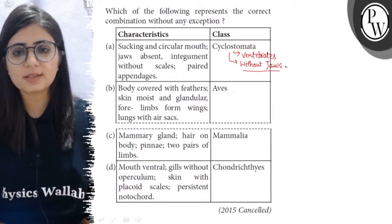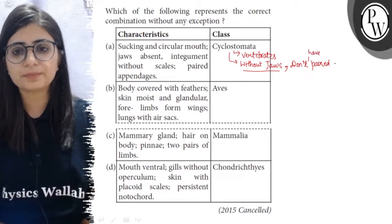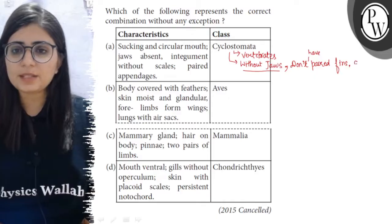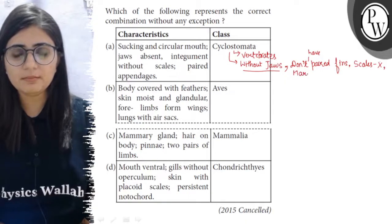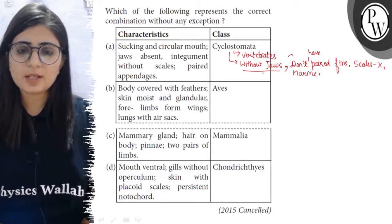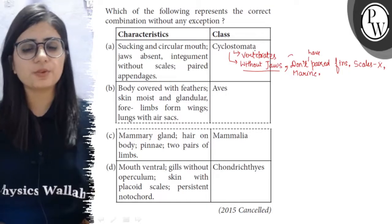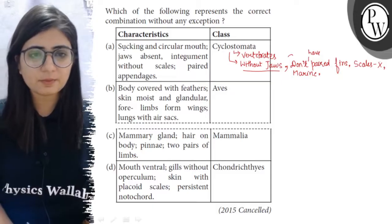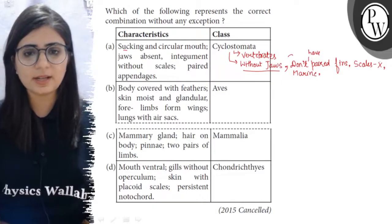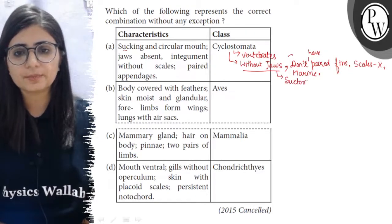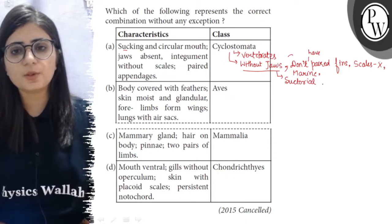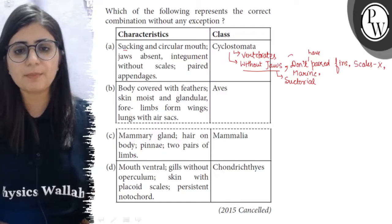One feature is they are without jaws. Second is they do not have paired fins — paired fins are absent. They also do not have scales on the body, and they live in marine water. Now, the first feature — sucking and circular mouth — is correct because Cyclostomata are without jaws and have a suctorial mouth modified to suck blood from fishes, as they are parasites on fishes.